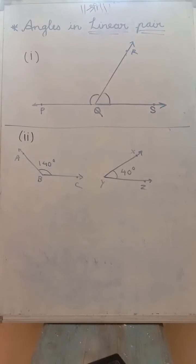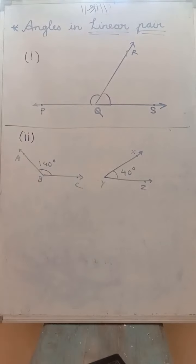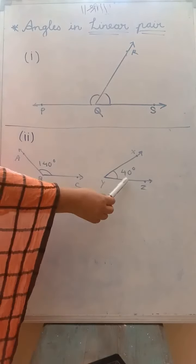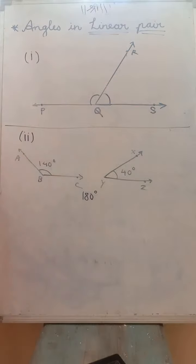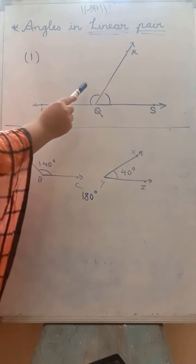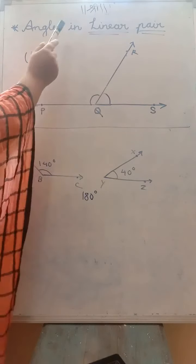Now, just look at figure 2. In figure 2 you can see 2 angles. The measure of angle ABC is 140 degrees and the measure of angle XYZ is 40 degrees. One is an obtuse angle, the other is an acute angle. If we add these two angles — 140 and 40 degrees — the addition will be 180 degrees. So it is a pair of supplementary angles. In figure 1, the two angles PQR and RQS, where the bottom line is a straight line, are also a pair of supplementary angles. And today we have learned that this is also called a pair of angles in linear pair.